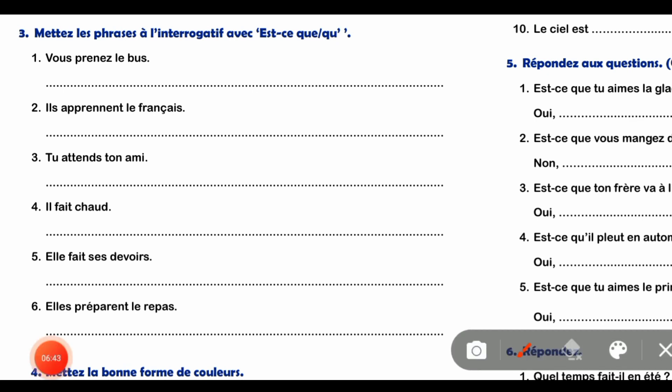Now let's come to the next question. क्या करना है interrogative convert करना है by using 'est-ce que'. अब देखो 'est-ce que' कैसे put करते हैं - sentence के आगे put करते हैं और last में question mark लग जाता है, और sentence as it is लगता है।